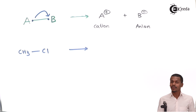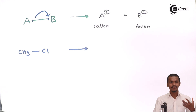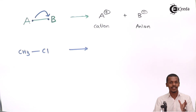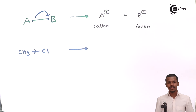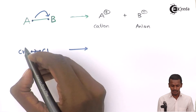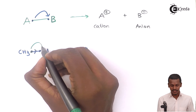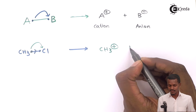Suppose we have CH3Cl undergoing heterolytic fission. Chlorine is more electronegative compared to the methyl group. The methyl group has a positive inductive effect (+I), meaning it pushes electrons toward the more electronegative atom. So the electrons of the C–Cl bond shift toward chlorine, forming CH3⁺, known as a carbocation, and Cl⁻.